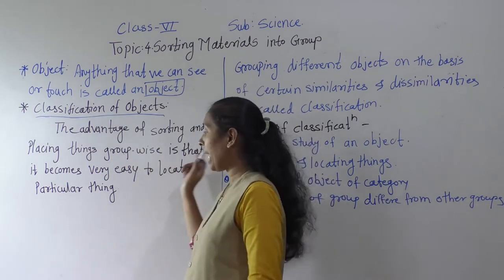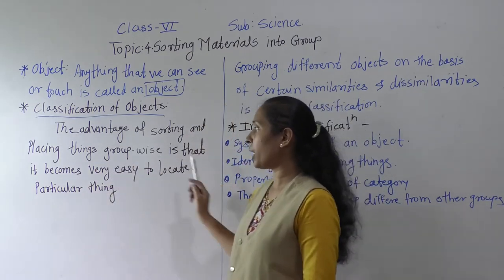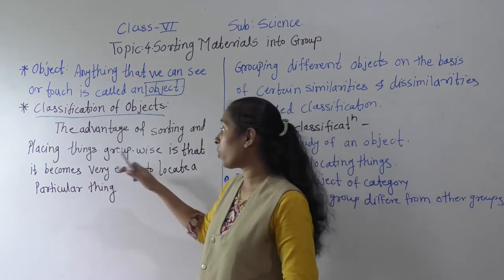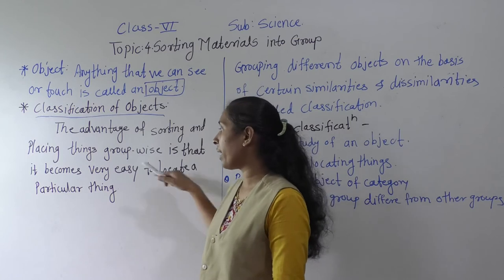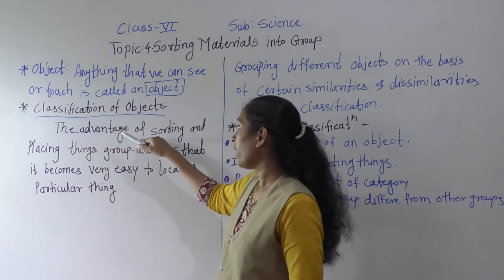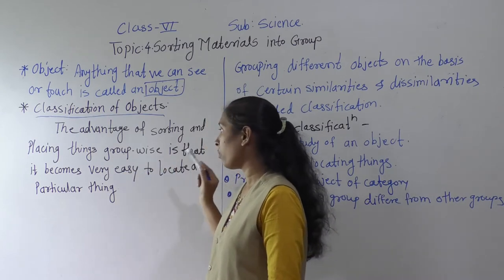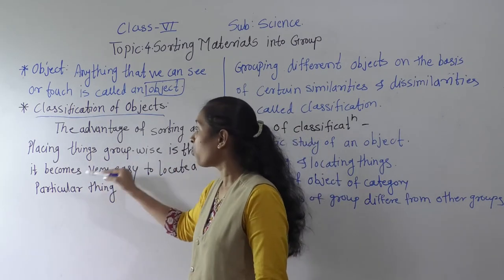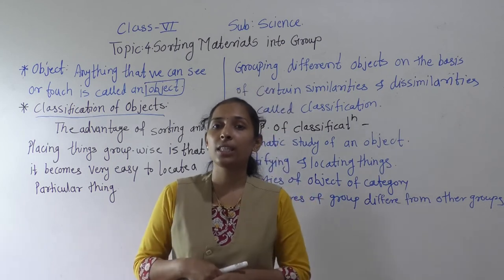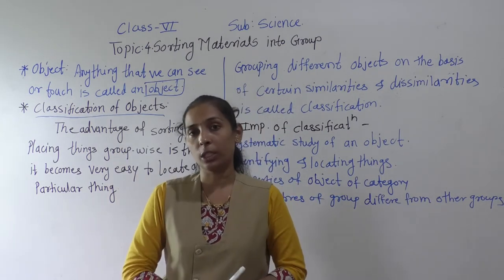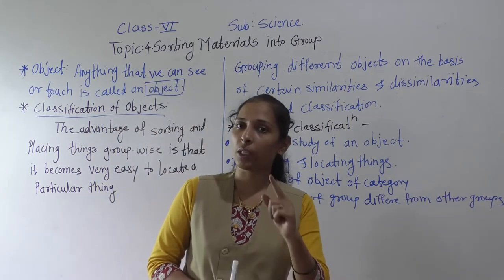The advantage of sorting and placing things group-wise is that it becomes very easy to locate a particular thing. Why do we sort objects into different groups? Because it allows us to easily locate, show, and identify different things. That is why classification, sorting, and group-wise separation of objects is very important.